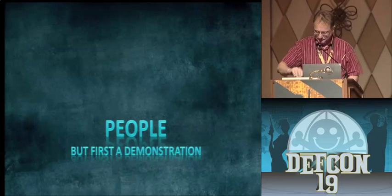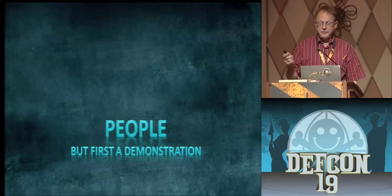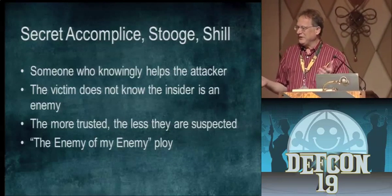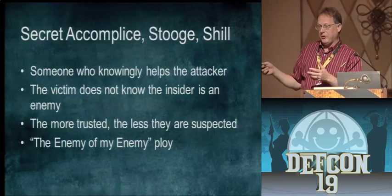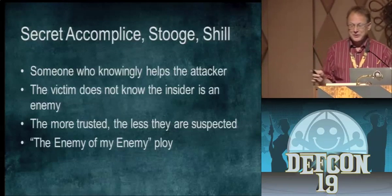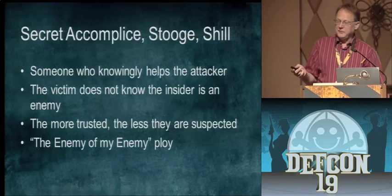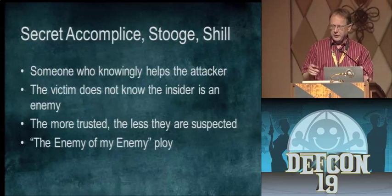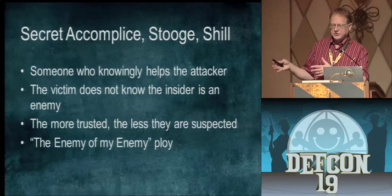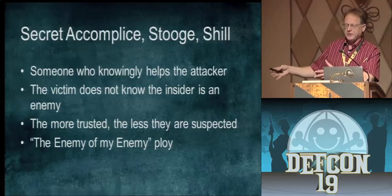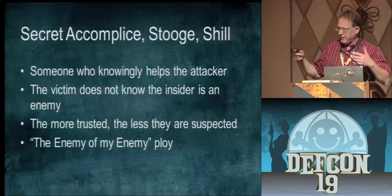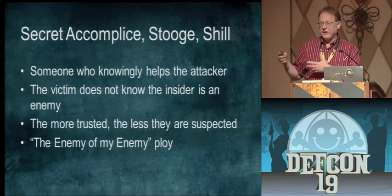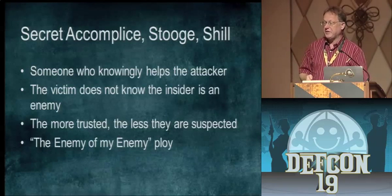So we're going to talk about people. The first one you're all thinking of is a shill — a stooge, a secret accomplice. Maybe all three of those people were accomplices, who knows? In hacking, this would be the insider threat — someone on the inside. For this to work, you really have to trust the person. If you don't trust them or suspect them, this might not work. The more you trust them, the more likely you're going to be deceived by them.